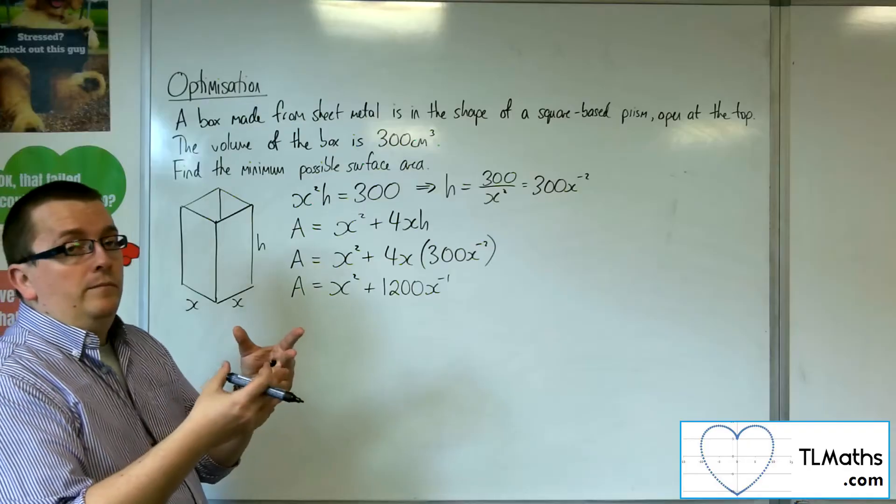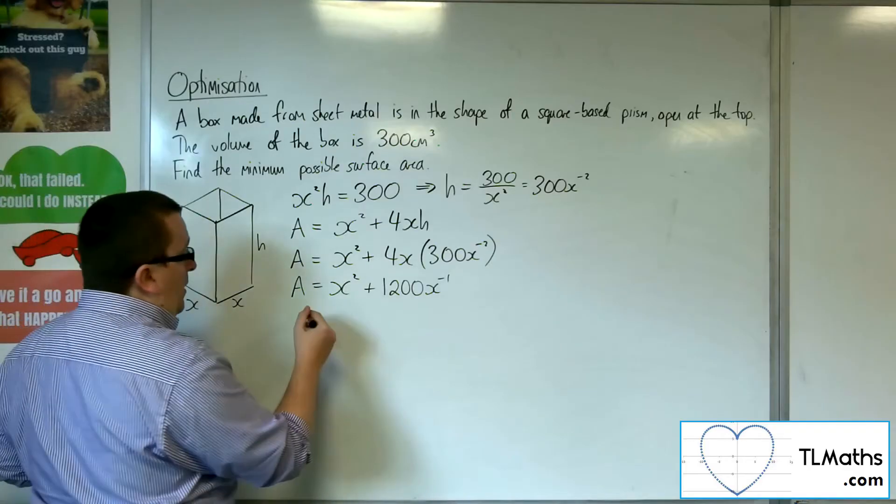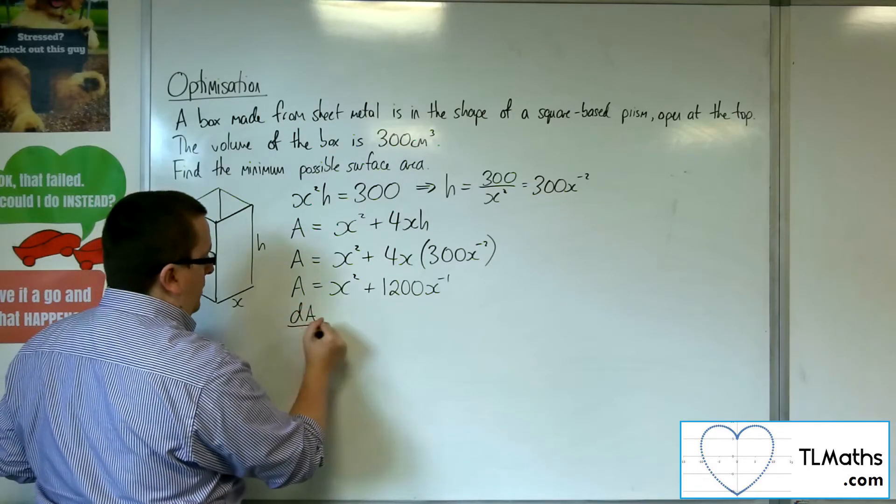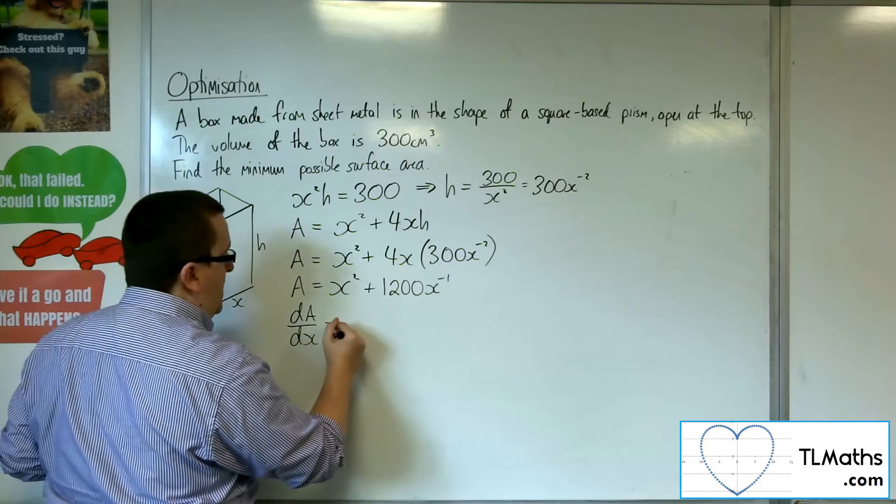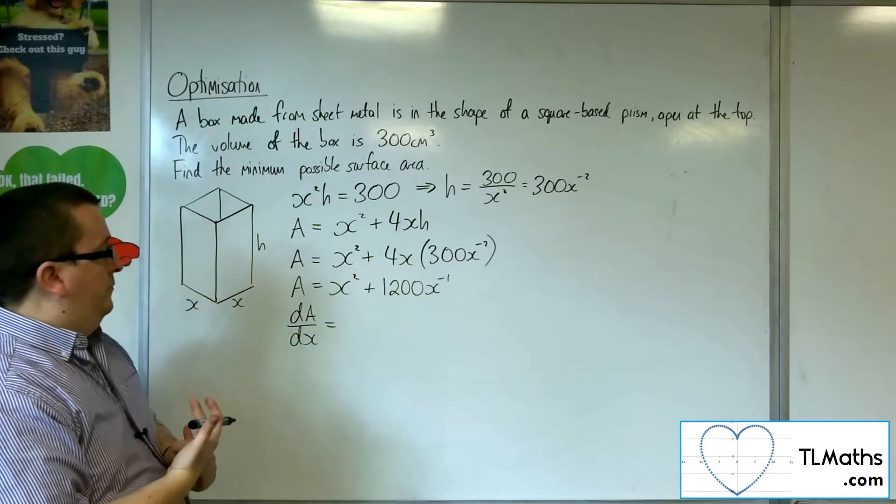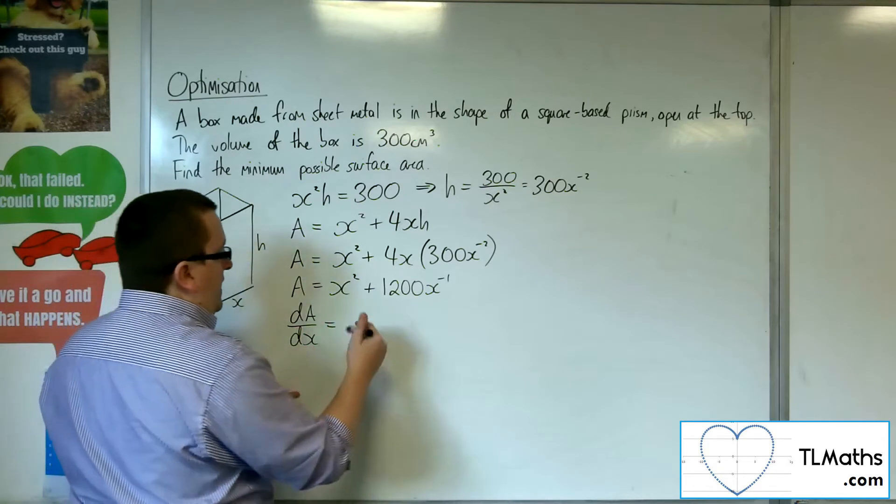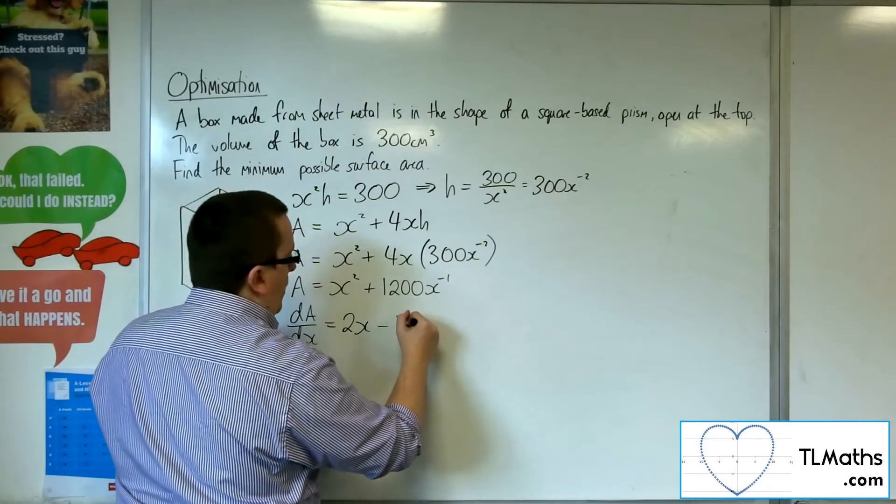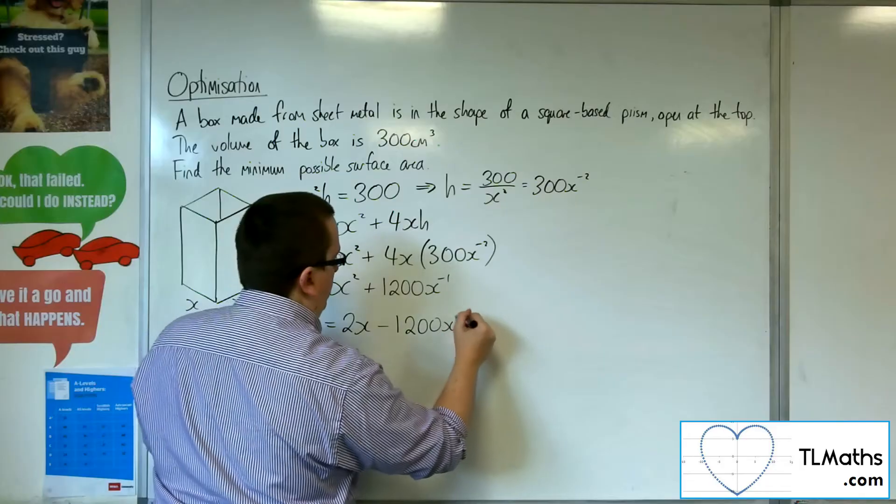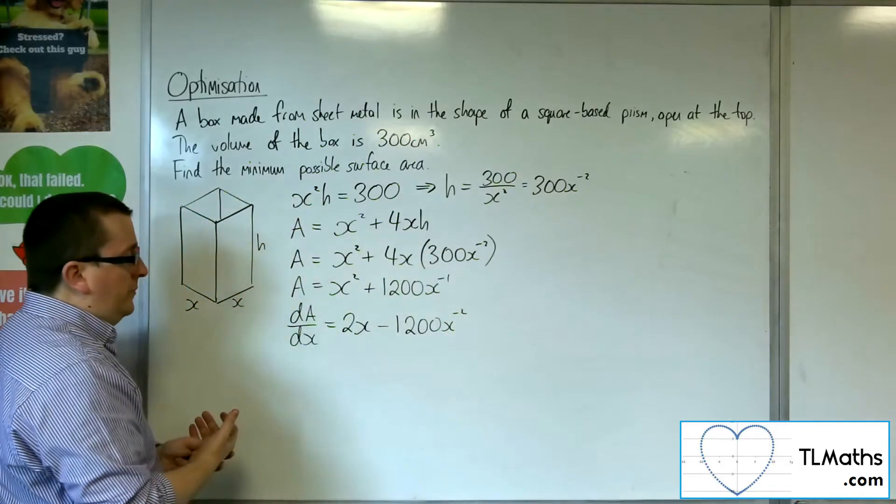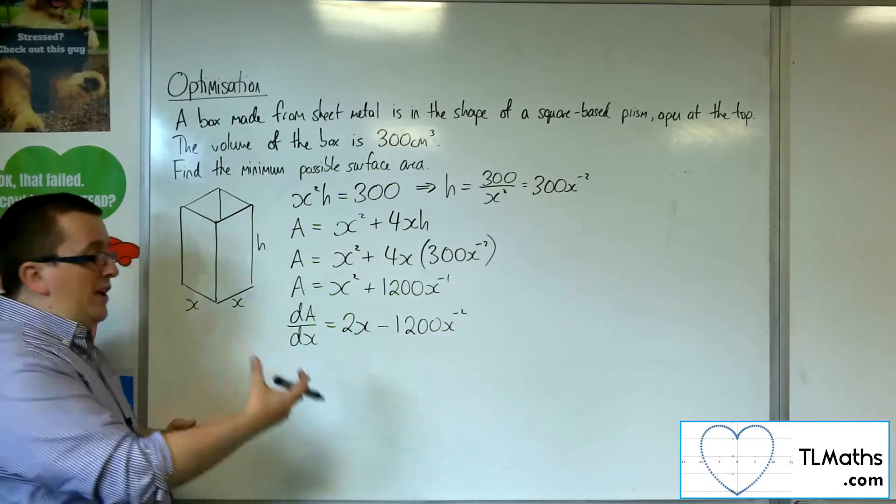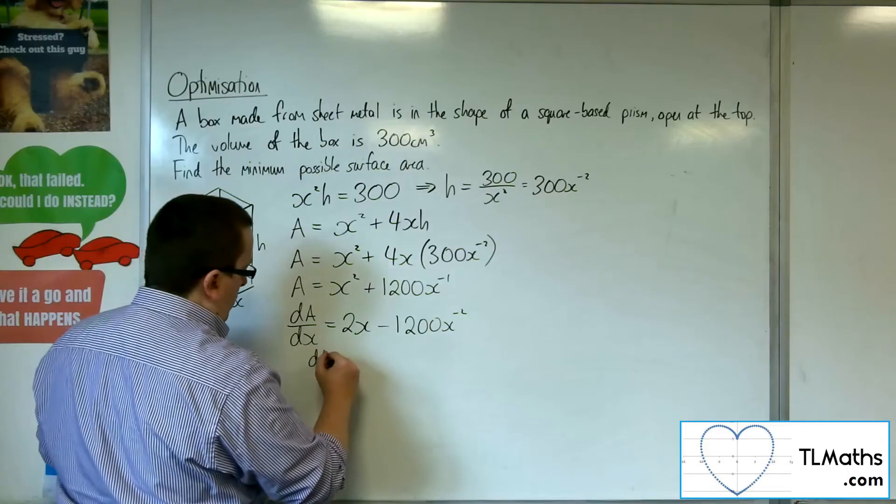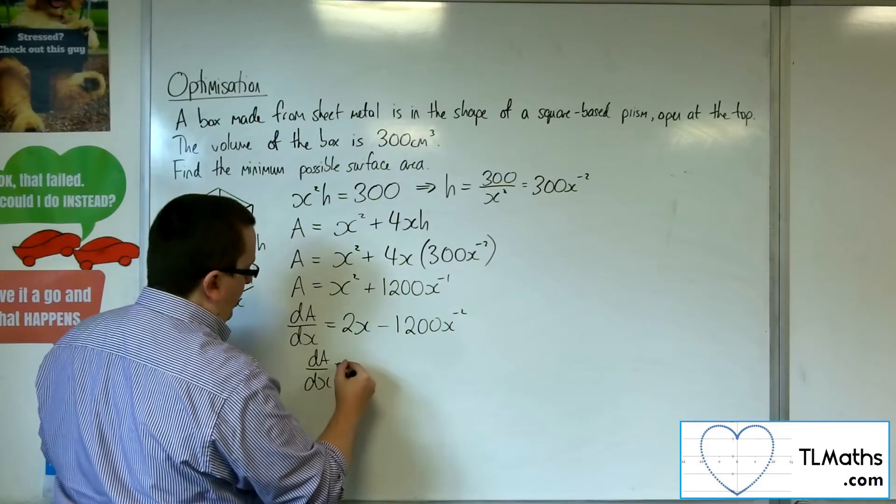So I want to minimize it. Okay, so I want to find dA by dx and find the value that will give me the minimum possible. So dA by dx will be 2x, and differentiating this will get me minus 1200x to the minus 2. So I want to put that equal to 0, because I want to find the stationary point of this curve.